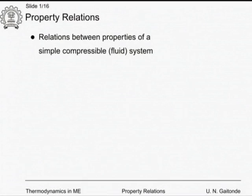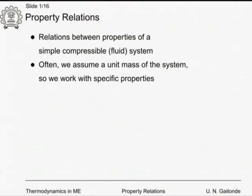We are going to look at property relations. In property relations, we will consider relations between properties of a simple compressible system, that is a fluid system, with one two-way mode of work: expansion PdV. We will generally assume a unit mass of the system, working in terms of specific properties — small s, small u, small v, p, and T will always be capital.